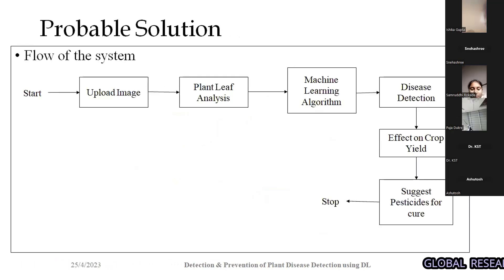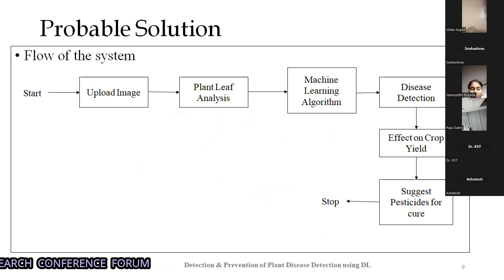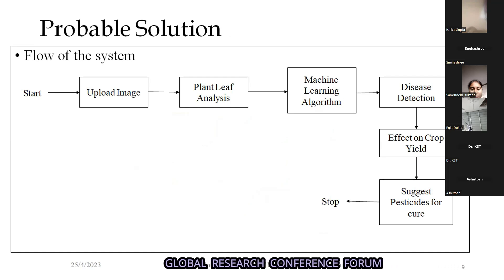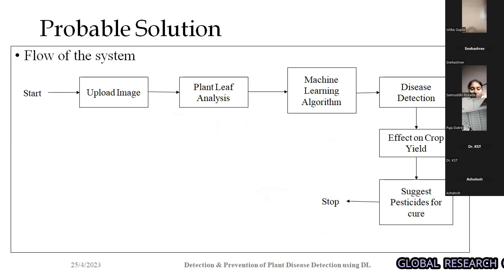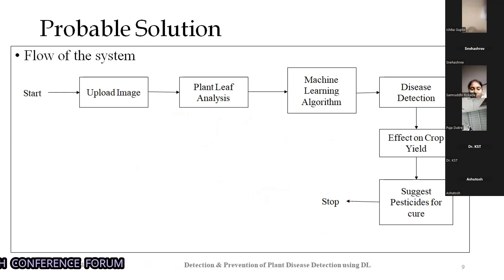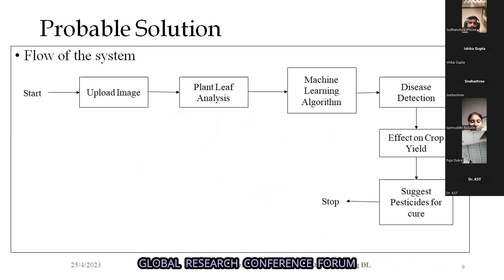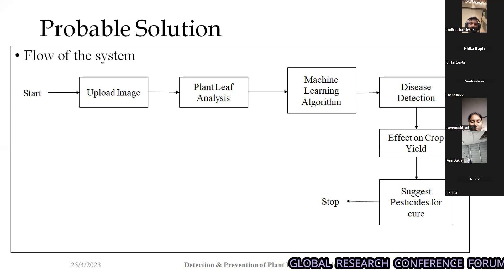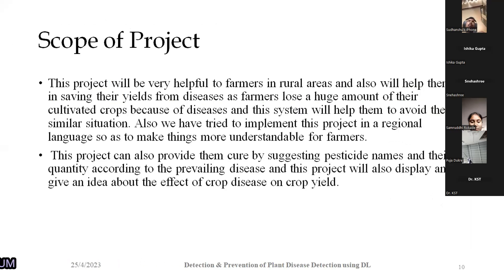In the first step, the farmer uploads the image of the plant leaf. Then we analyze what plant we are checking for. We use a CNN-based machine learning algorithm for analysis. Using that algorithm, we detect the disease, then check the effect of that disease on the crop, and at the very last step we suggest pesticides for the cure.